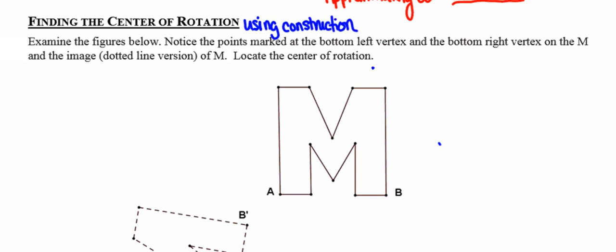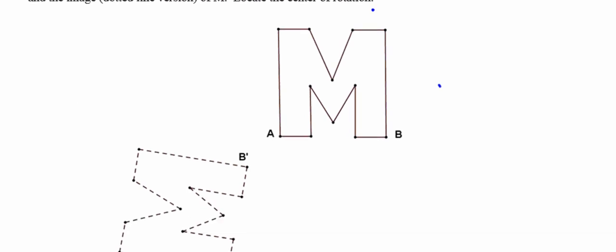So if I notice the original image here, M, and then its image, which is the dotted after some rotation.